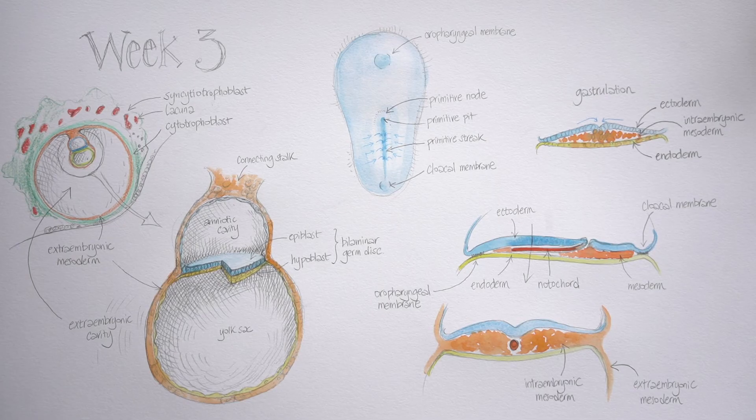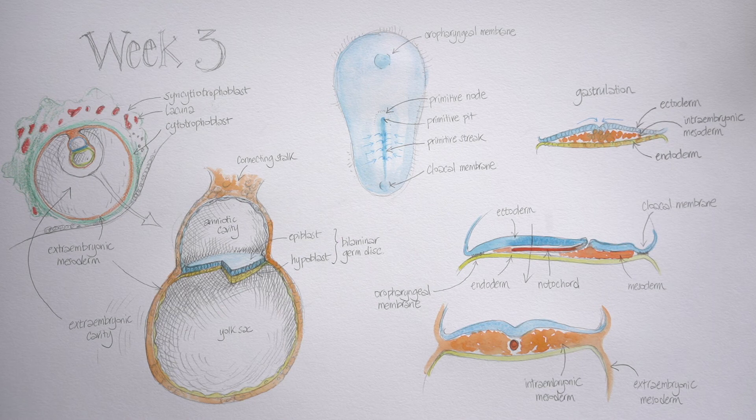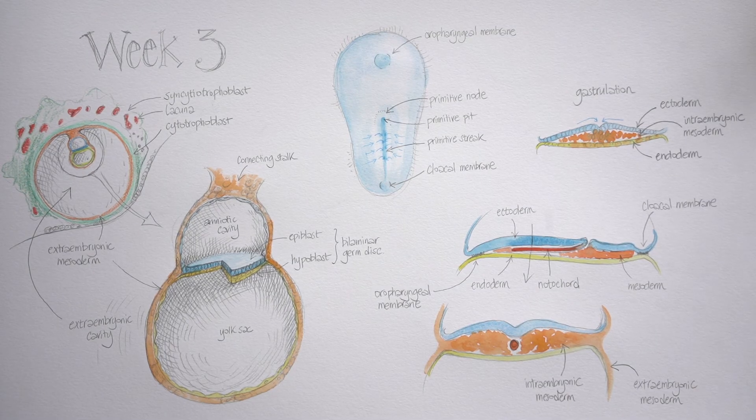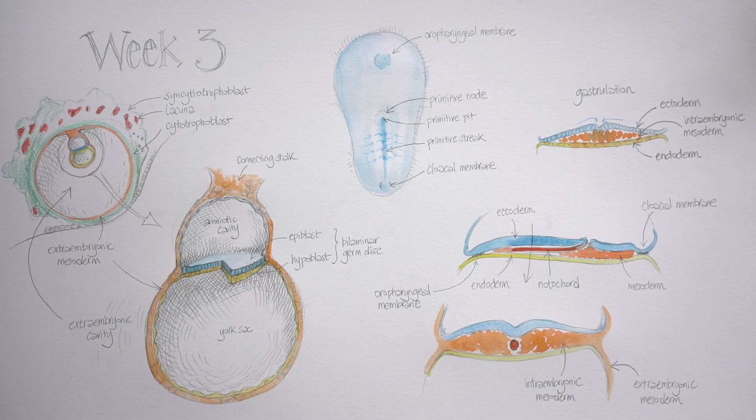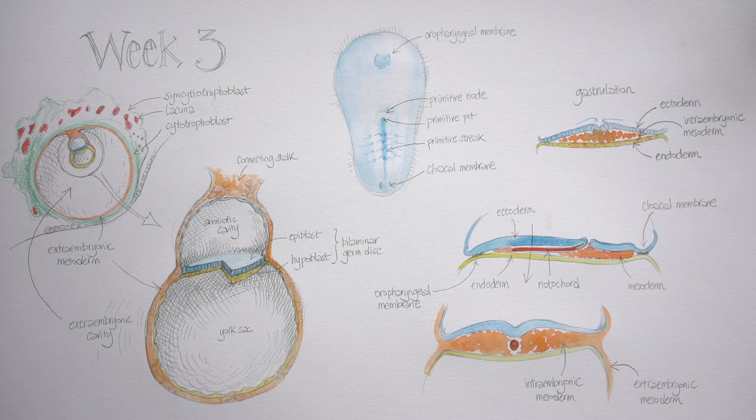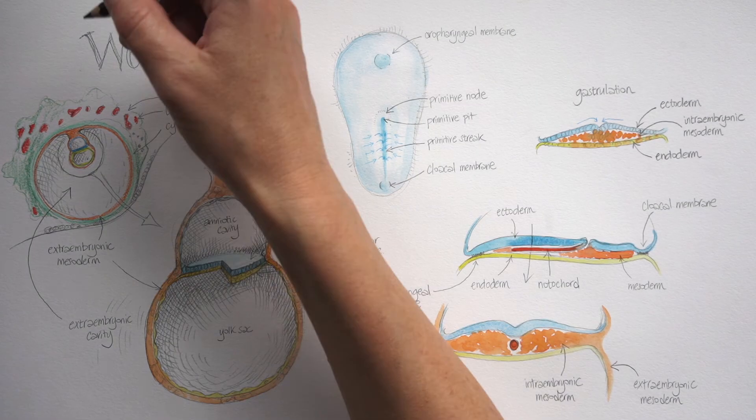So this is the major transformation that happens in week three. It's called gastrulation. In some more primitive animals, it does actually create a gut at the same time, which is why it's called gastrulation. The gaster bit tells you it's something to do with guts. We haven't quite created guts in a human embryo; that's going to happen a little bit later. So that word gastrulation just means the transformation of the two layers, the bilaminar germ disc, into a three-layered trilaminar germ disc.